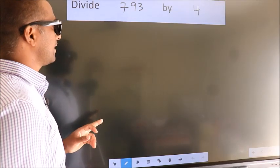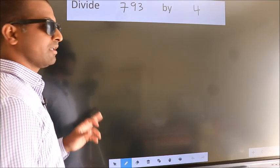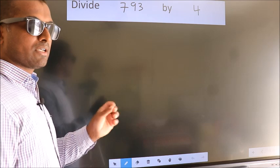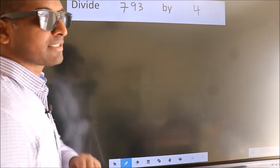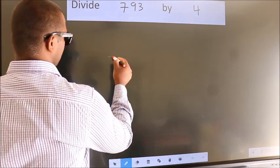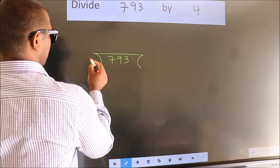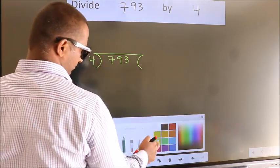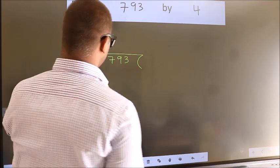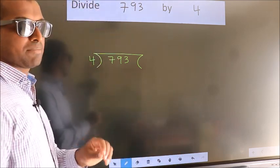Divide 793 by 4. To do this division, we should frame it in this way. 793 here, 4 here. This is your step 1.